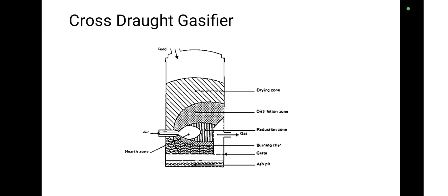The next type of gasifier is cross draft gasifier. Here the air circulation is coming through from the side walls of the gasifier unit, so it is called cross draft gasifier. The remaining things are the same for all types of gasifiers.